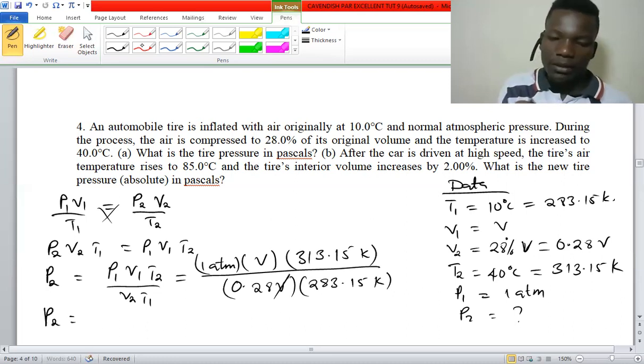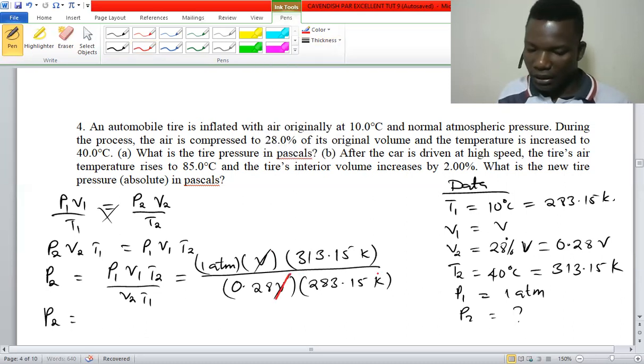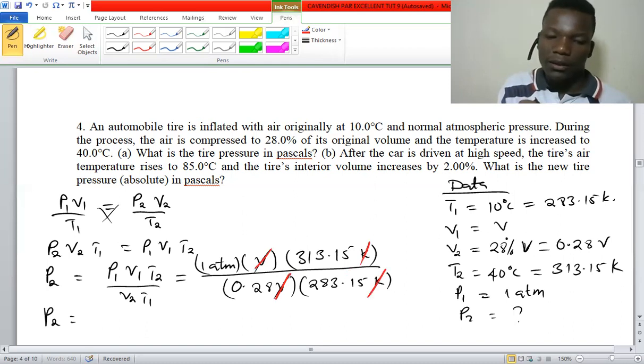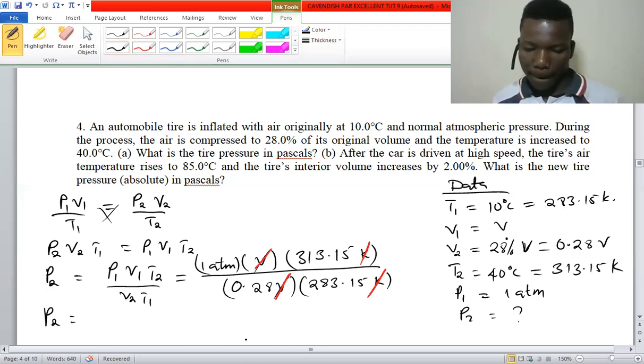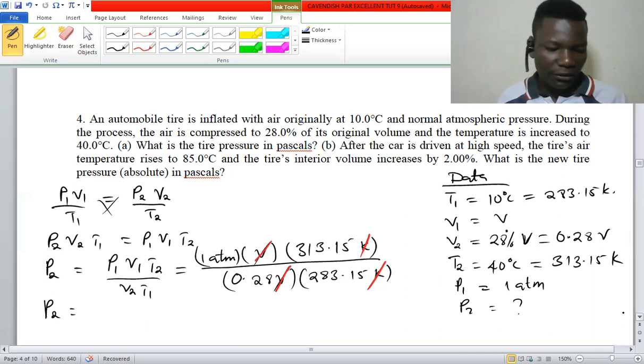So we are going to have V cancel, and what we get now in 0.28... calculating this, we get 3.95 atmospheres.